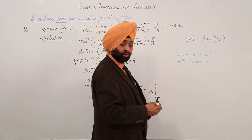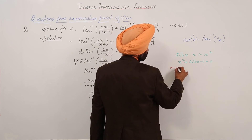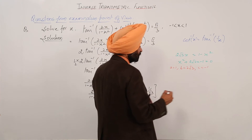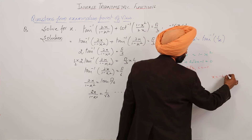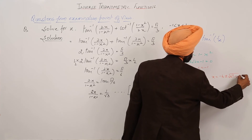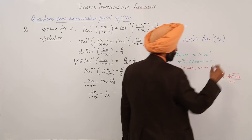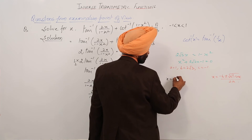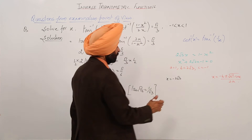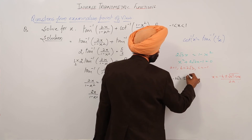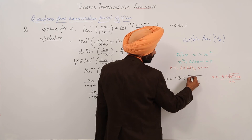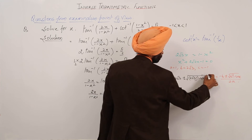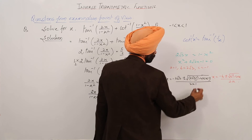Now, what is a here? We are using the quadratic formula. We have a equal to 1, b equal to 2 root 3, and c equal to minus 1. The quadratic formula is x equals minus b plus minus under root (b square minus 4ac) upon 2a. So x equals minus 2 root 3 plus minus under root of (2 root 3) whole square minus 4 times 1 times minus 1, upon 2 into 1.